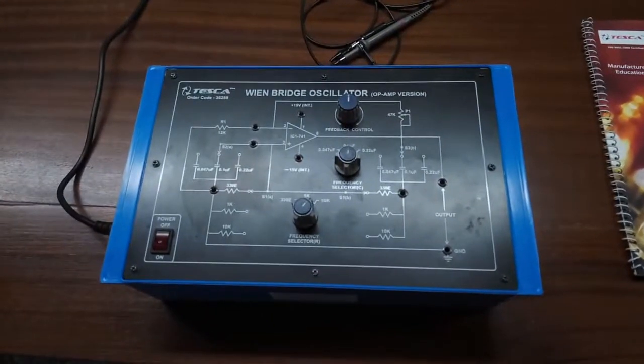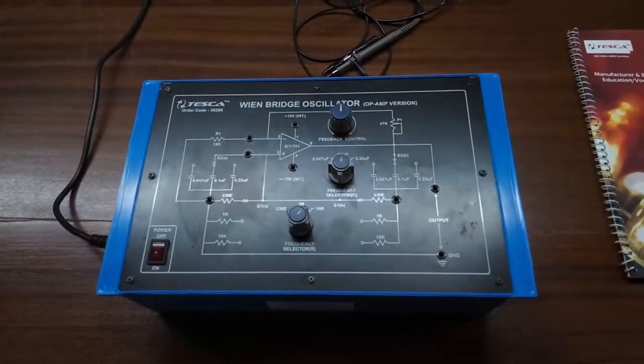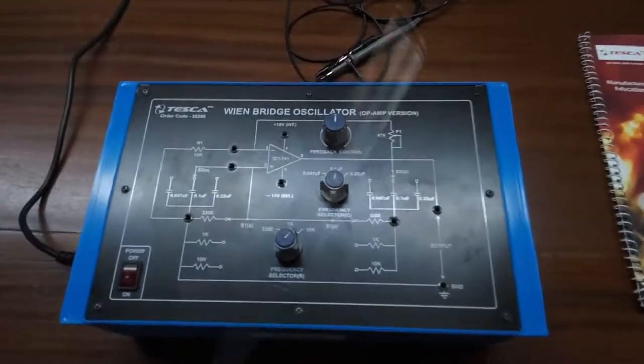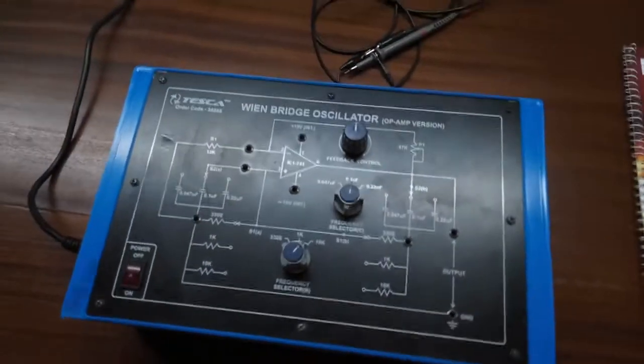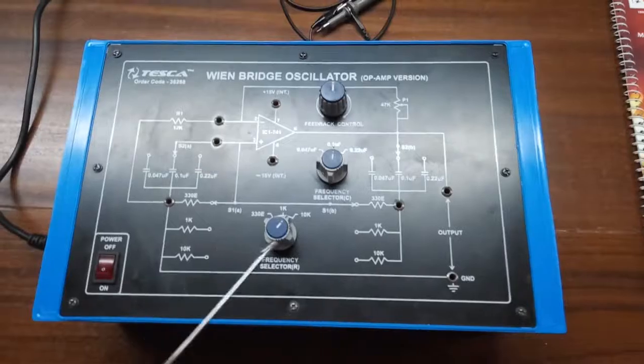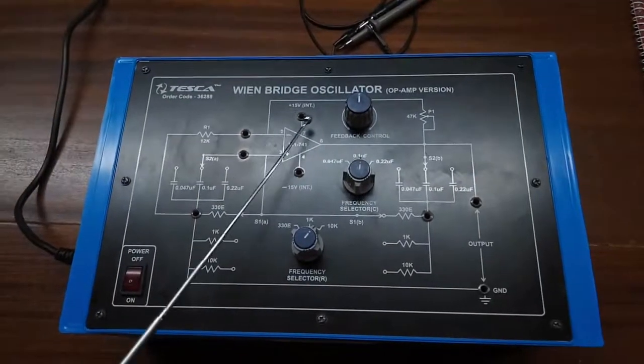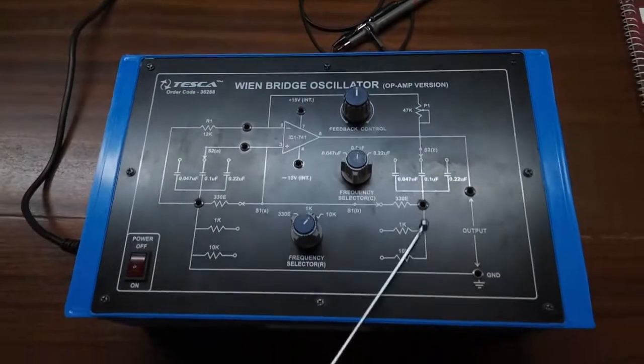Today we are going to show you our Wien Bridge Oscillator circuit. This is the open version, order code 36228. This is the trainer kit. Here is the circuit diagram given on the trainer kit.